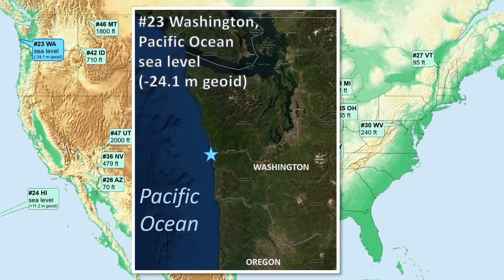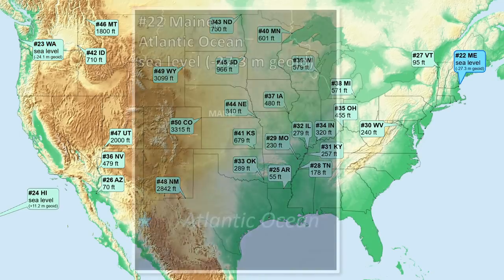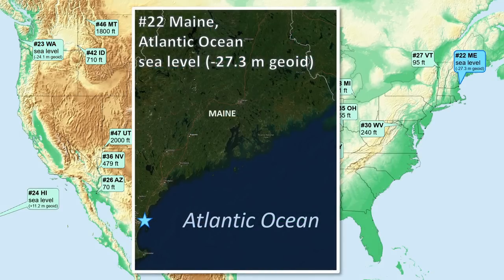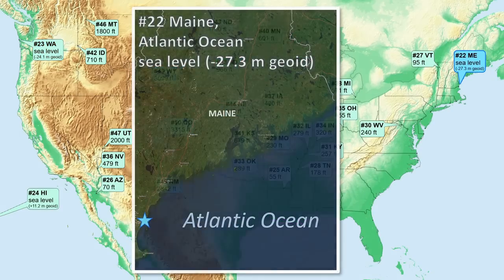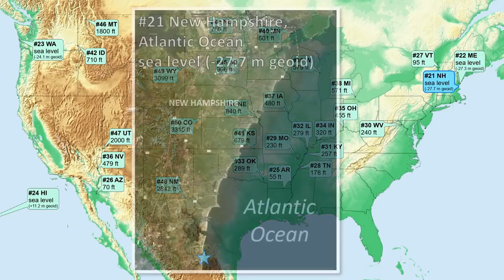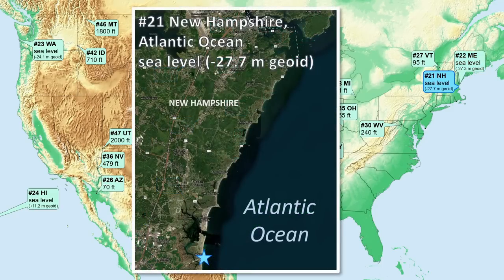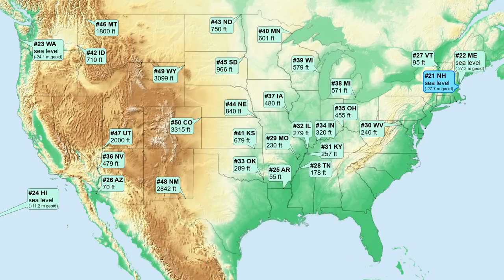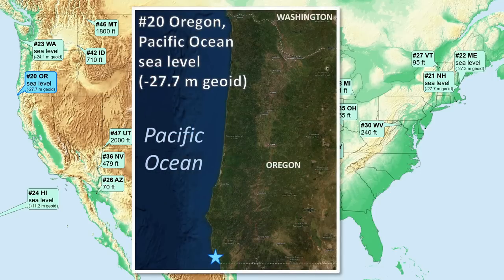Moving into east coast states: number 22 is Maine, on the Atlantic Ocean. Number 21 is New Hampshire. Back to the west coast, number 20 is Oregon.